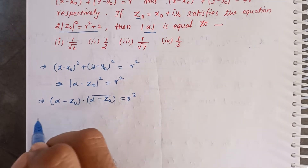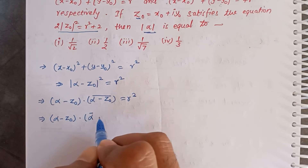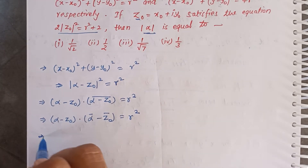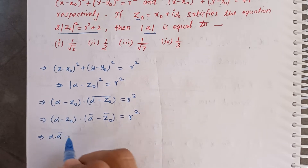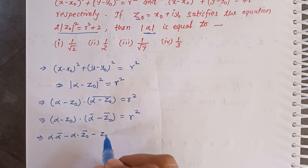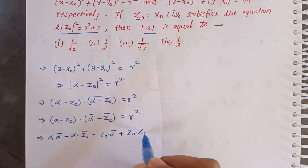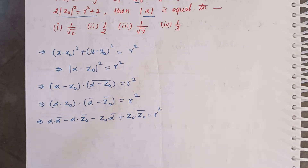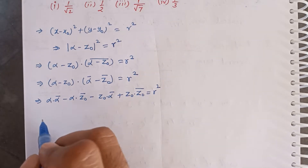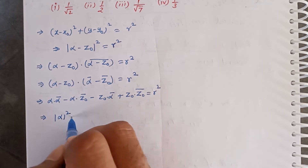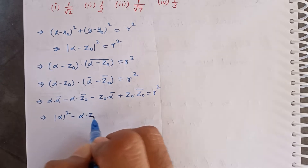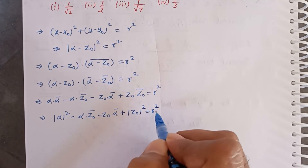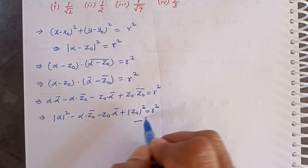We expand the conjugate: (α − z₀)(ᾱ − z̄₀) = r². Expanding, we get α·ᾱ − α·z̄₀ − z₀·ᾱ + z₀·z̄₀ = r². We know that α·ᾱ = |α|², z₀·z̄₀ = |z₀|², so this becomes |α|² − α·z̄₀ − z₀·ᾱ + |z₀|² = r². This is equation number one.